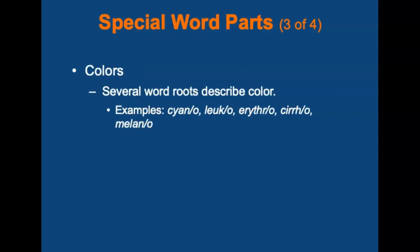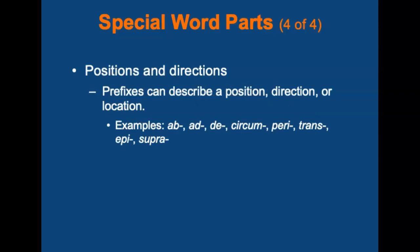Several word roots are used to describe colors, such as: 'cyano-' (blue), 'leuco-' (white), 'erythro-' (red), 'xantho-' (yellow), or 'melano-' (black). Prefixes can also be used to describe position, direction, or location. Some examples include: ab-, ad-, de-, circum-, peri-, trans-, epi-, and supra-.